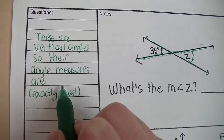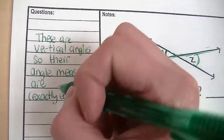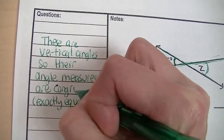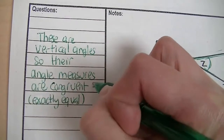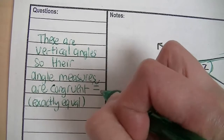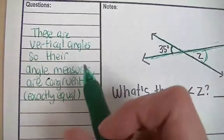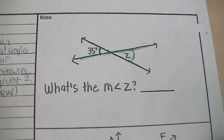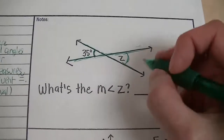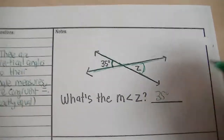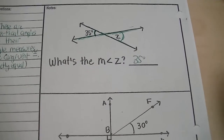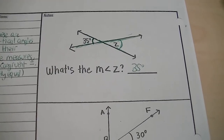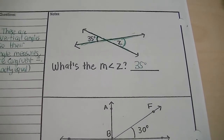They're vertical angles, so their angle measures are congruent. The symbol for congruent is an equal sign with a squiggly line above it, meaning they're exactly equal — same size, same shape, same angle measures. So the measurement of angle Z is 35 degrees, simply because of the definition of vertical angles. Vertical angles always have the characteristic of being congruent.